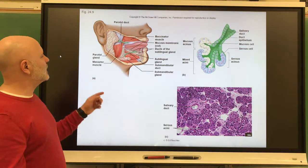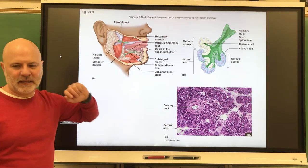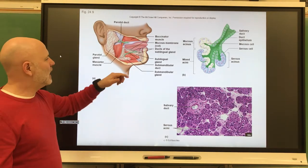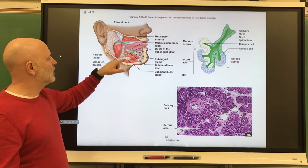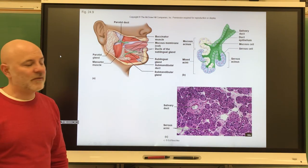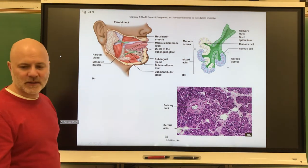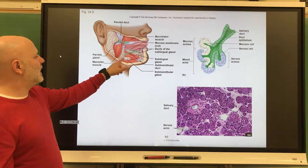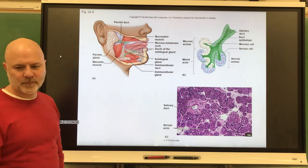So if we look at the glands again, parotid is mainly serous. Submandibular is mainly serous. Sorry about that. And the sublingual is a kind of combination there, but mostly mucus there.